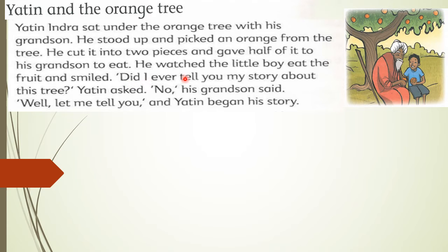'Did I ever tell you my story about this tree?' — هل أخبرتك سابقاً بقصتي عن هذه الشجرة؟ — Yatin asked. 'No,' his grandson said. 'Well, let me tell you' — دعني أخبرك — and Yatin began his story — بدأ ياتن بقصته. In this text, 'He' refers to Yatin Indra.